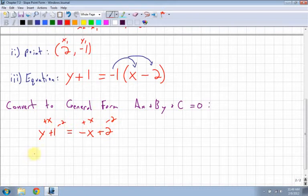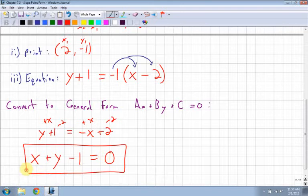So I get a positive x on the left side plus my y, which was already positive, and then 1 minus 2 is just negative 1. And then on the right side, I'm left with just 0, which is what I want. So that's converting my slope point form to general form.